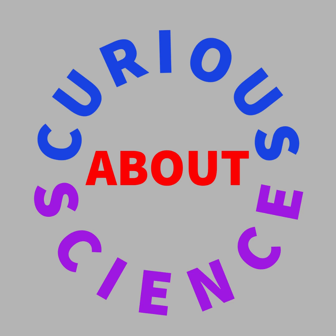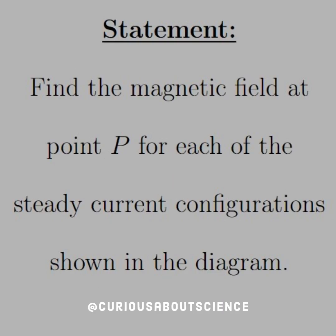All right, welcome back. Our statement today reads, find the magnetic field at the point P for each of the steady current configurations shown in the diagram.